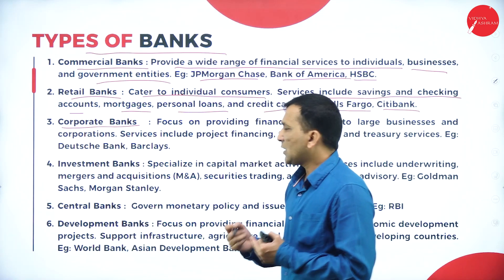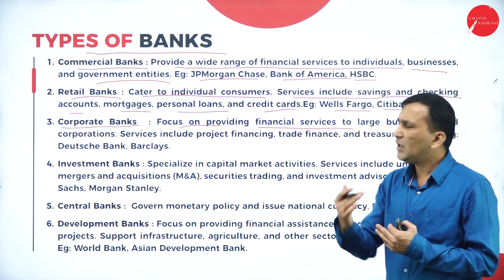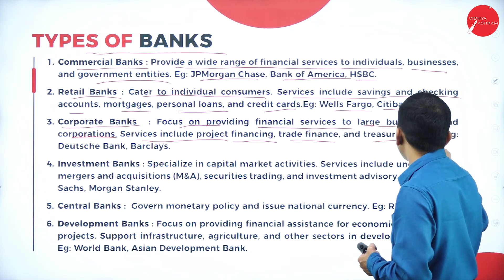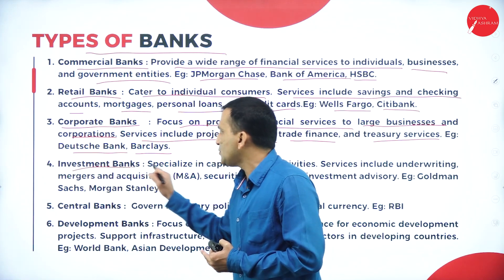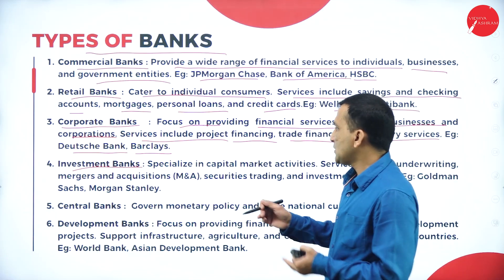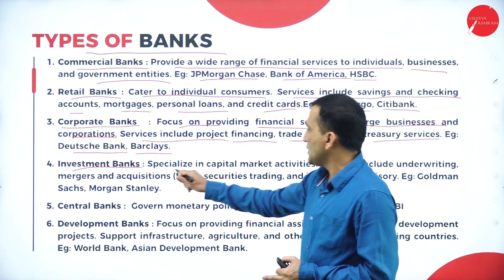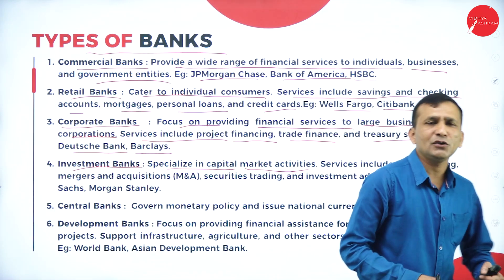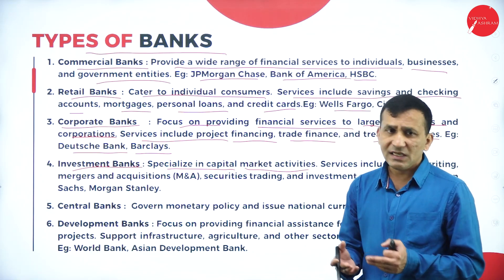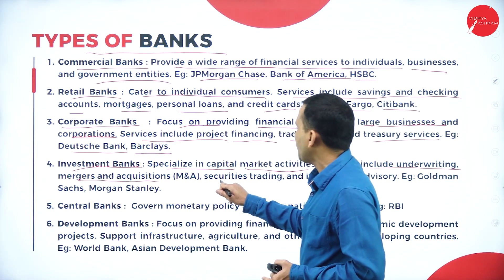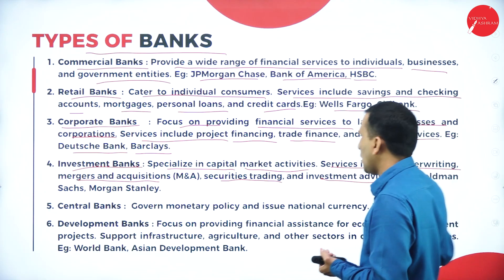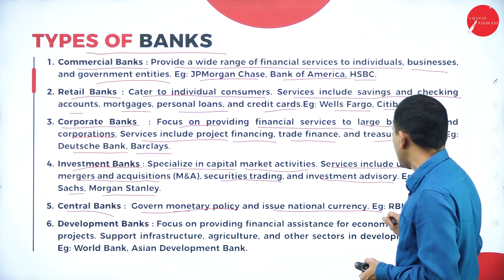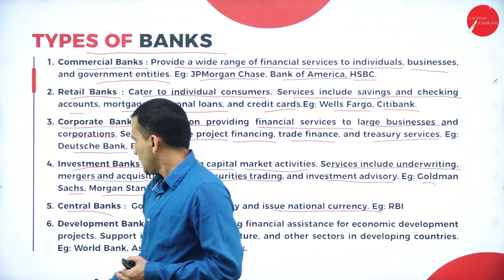Third is the corporate bank, which focuses on providing financial services to large businesses and corporations. Services include project financing, trade financing, and treasury services. Examples include Deutsche Bank and Barclays. Fourth is the investment bank, which specializes in investing — infrastructure projects, capital market activities, IPOs, and securities. Services include underwriting, mergers and acquisitions, security trading, and investment advisory. Examples include Goldman Sachs and Morgan Stanley. Fifth is the central bank — such as the RBI — which governs monetary policy and issues the national currency.